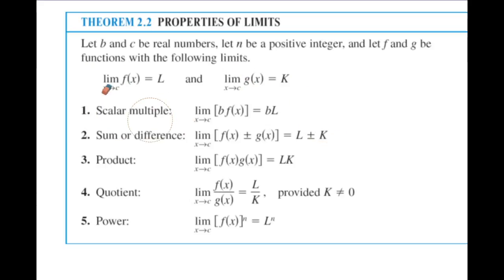Then scalar multiples. So basically what it says, if you're taking the limit of something and it has a coefficient, you can actually take the limit of the function and multiply it by that coefficient. So for instance, the limit of f(x) was L, and it's being multiplied by b, so it's really b times L.